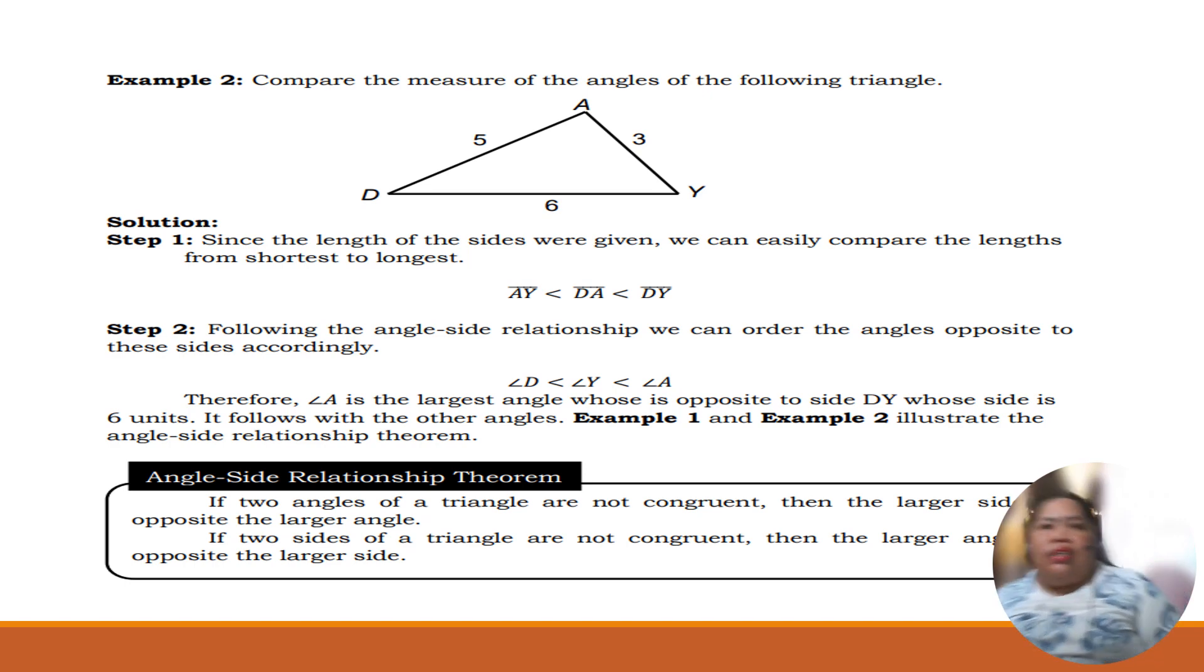Example 1 to illustrate the angle-side relationship theorem. What is angle-side relationship theorem? If two angles of the triangle are not congruent, then the larger side is opposite the larger angle. And if two sides of triangle are not congruent, then the largest angle is opposite to the larger side.